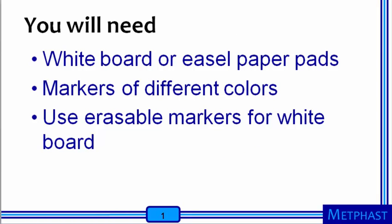The objective of this activity is to illustrate the pathways through which the general public and workers are exposed to nanomaterials in products. To carry out this activity, you will need a whiteboard or easel paper pads and markers of different colors. If using a whiteboard, make sure to use erasable markers.